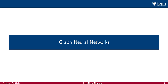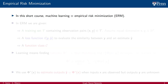We have reached the momentous time when we are ready to define graph neural networks. Graph neural networks are the tool we use for machine learning on graphs. Therefore, we need to begin by specifying what we mean by machine learning. In this short course, machine learning is a synonym for empirical risk minimization.